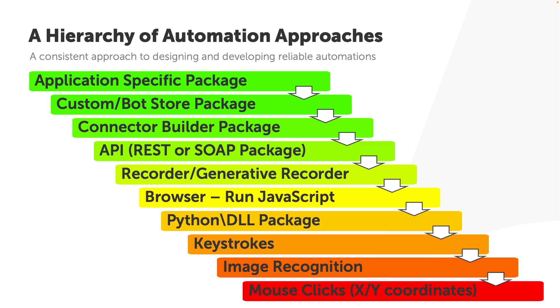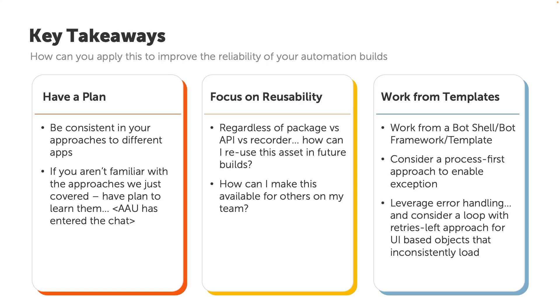So that's my order of operations. Whenever I'm building a new automation and working with applications or interfaces I haven't used before, I go through this hierarchy: do I have an application-specific package? Do I need to build something? Is there an API? Can I use Recorder? The more I'm sticking to the green approaches, the more reliable my automation is going to be and the more quickly it will execute. As I start getting into the red and orange options, I get more hesitant about long-term reliability and how much babysitting the automation will need. Have a plan — be consistent with the approaches you're taking to different applications.